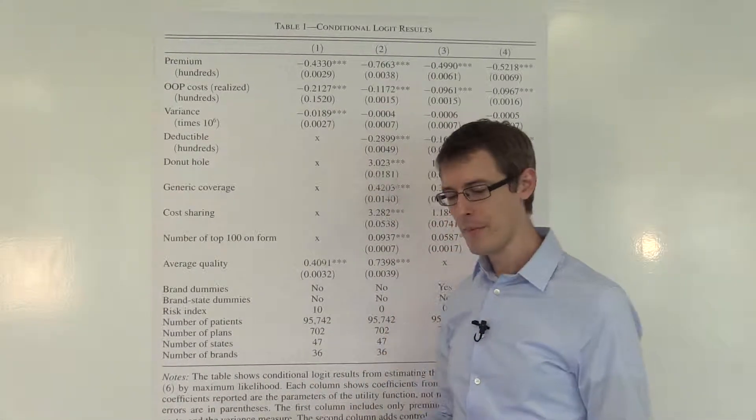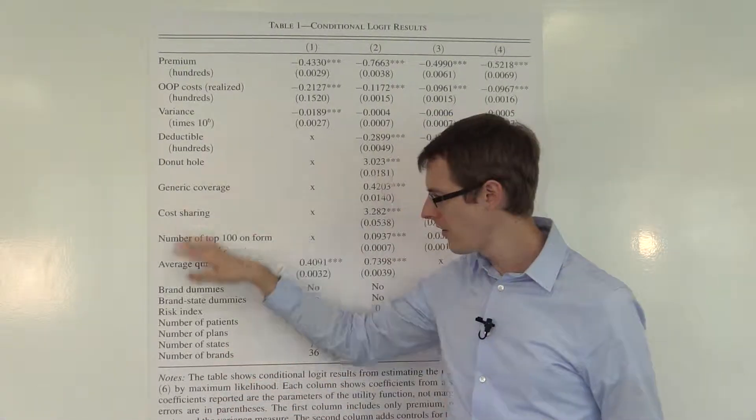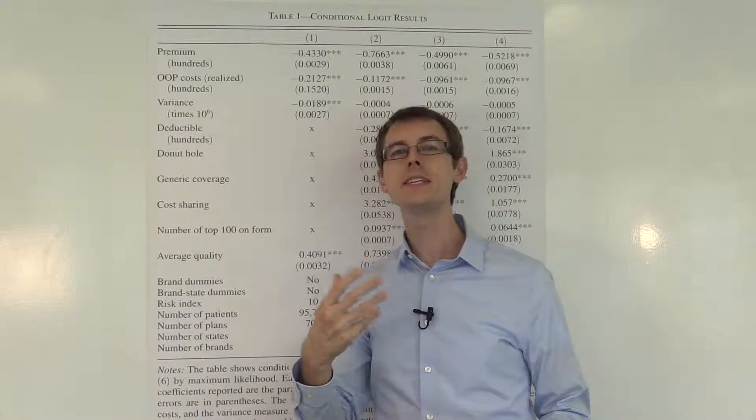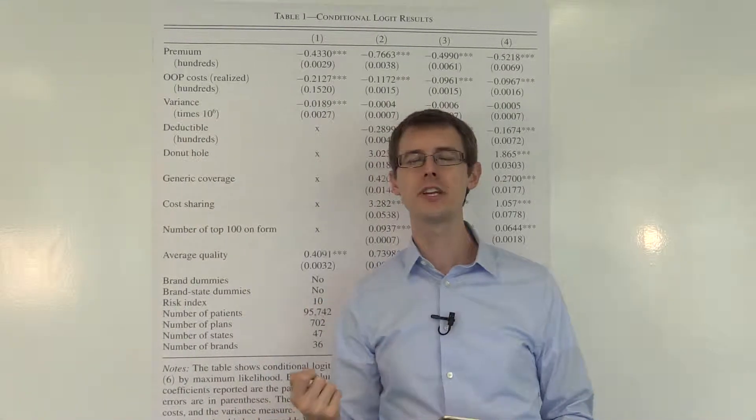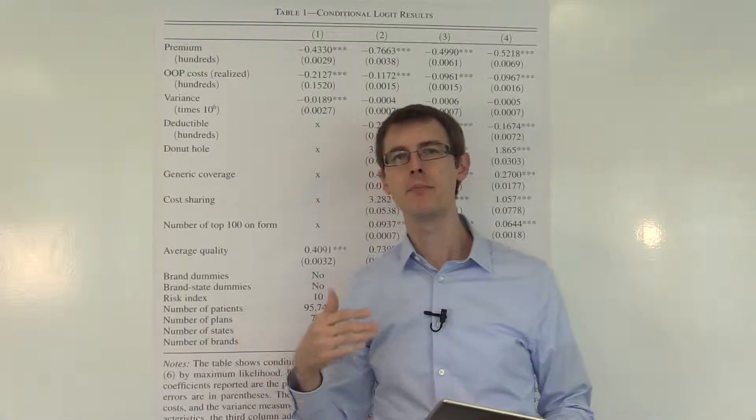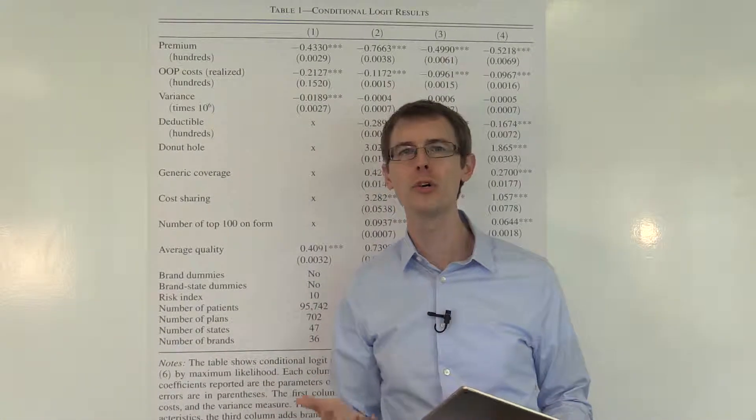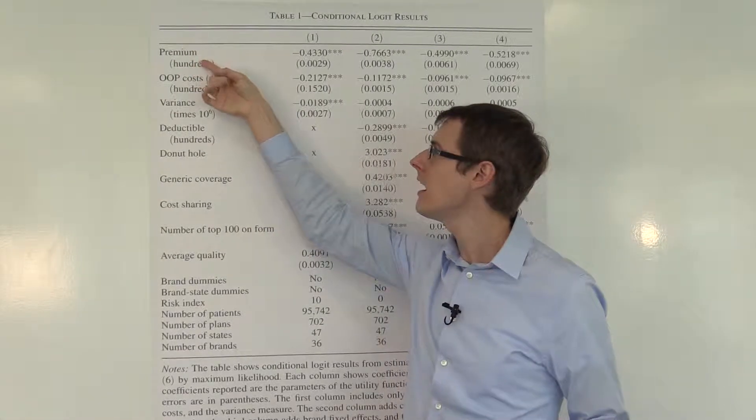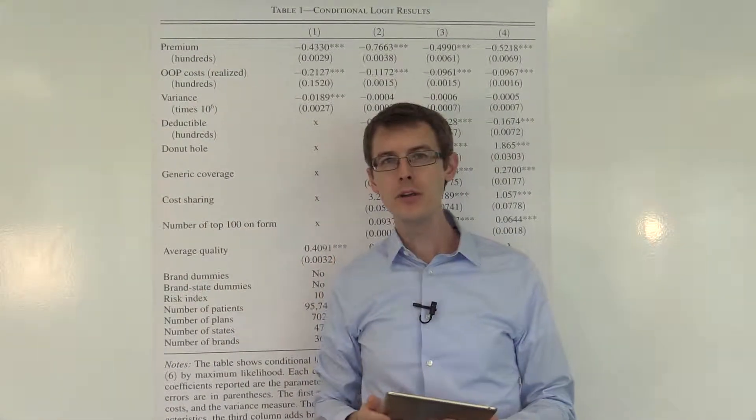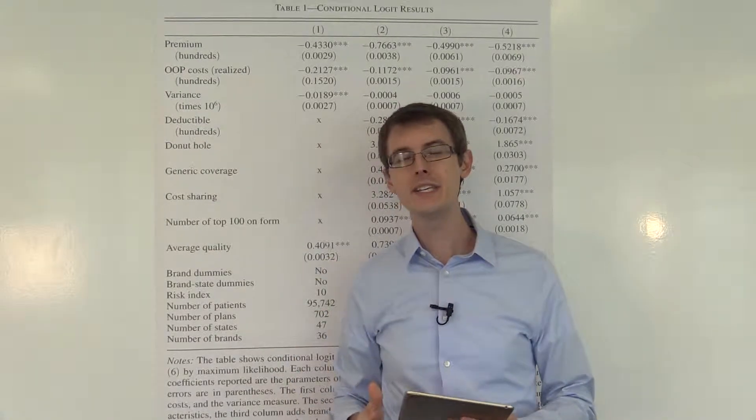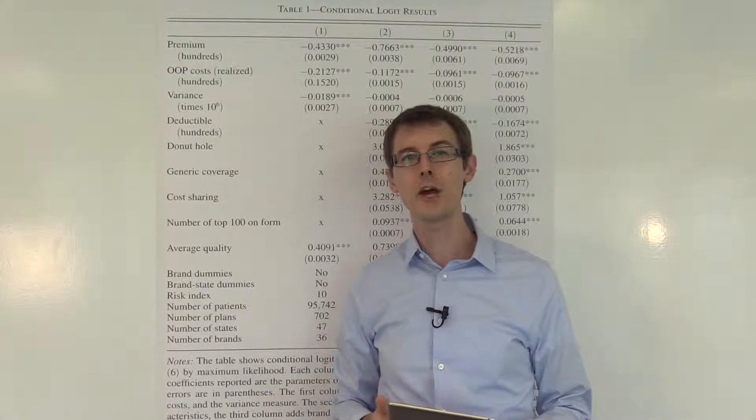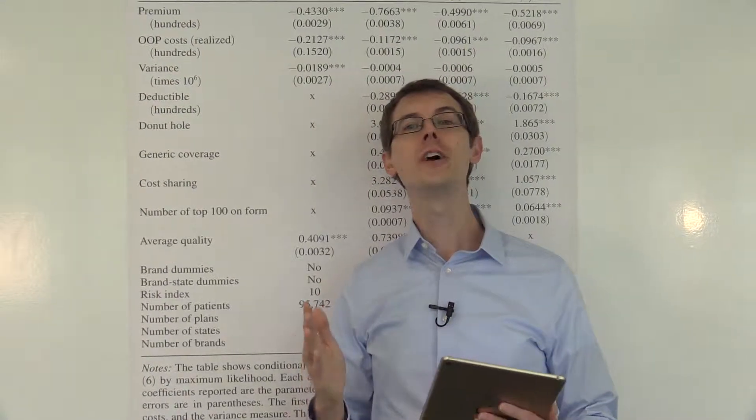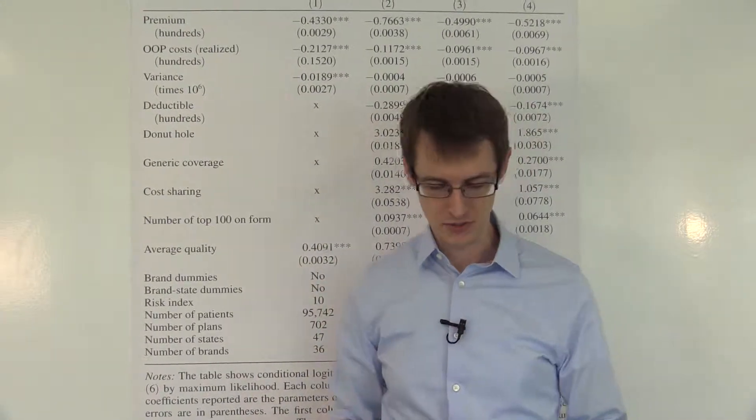Well, why is this important? Well, suppose that all the insurance plans that are available stay the same, and we somehow were able to get all senior citizens to make the correct choices, to pick the plans that actually had the lowest cost, and to not pay such unwarranted attention to the premiums. Well, they compute that total expenditure by these senior citizens on health care would go down by 27%. That is a huge number. That's why we care about these results.